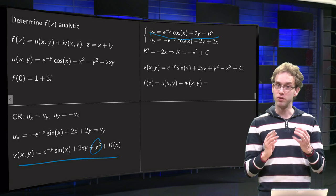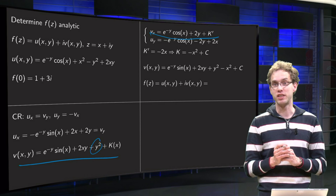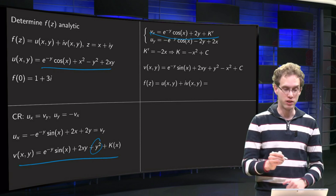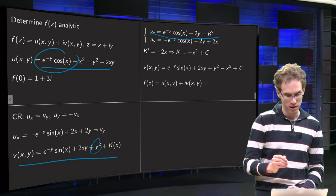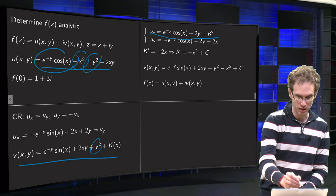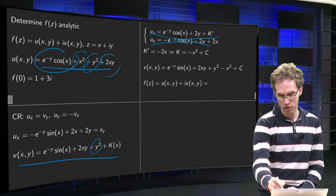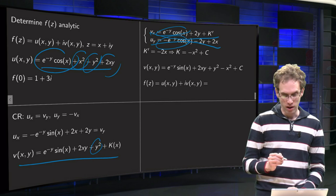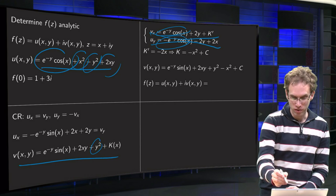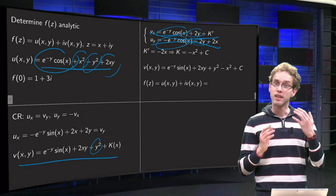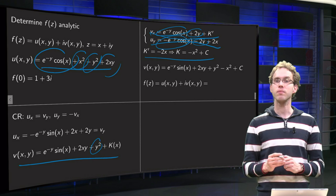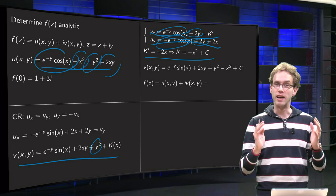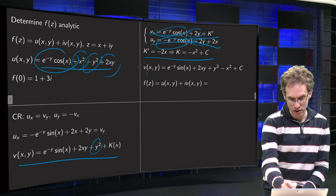We also compute uy, because we have u given. Differentiating u with respect to y yields minus e to the power minus y times cosine x from the first term. The x squared term vanishes, giving minus 2y, and differentiating 2xy gives plus 2x. Now we know vx equals minus uy: the cosine x times e to the power minus y terms match, the 2y terms match, so what remains is k prime equals minus 2x. Integrating gives k equals minus x squared plus a constant c, which no longer depends on x or y.